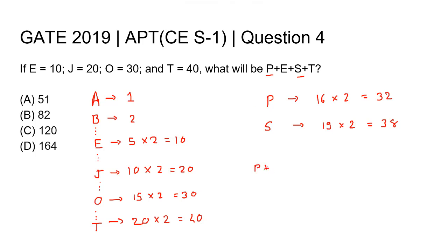Therefore P plus E plus S plus T will be 32 plus 10 plus 38 plus 40. The sum will be 120. So the right answer to this question will be option C, 120.